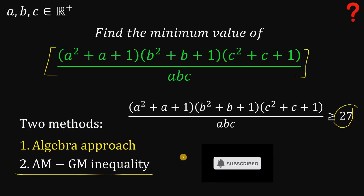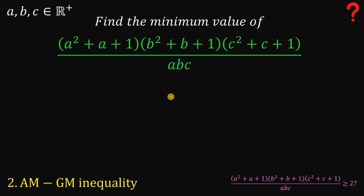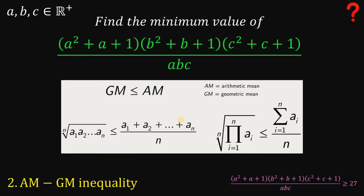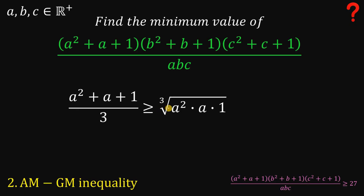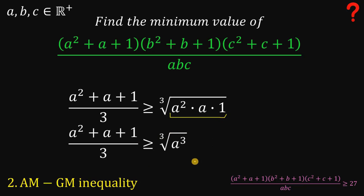Now, how about using a straightforward technique with the AM-GM inequality? The AM-GM inequality states that the arithmetic mean of some positive numbers is always greater than or equal to its geometric mean. Let's apply this inequality to our expression. We have A squared plus A plus 1. Since A is a positive number, A squared is positive, A is positive, and 1 is positive. So the arithmetic mean gives us (A squared plus A plus 1) over 3 is greater than or equal to the cube root of A squared times A times 1.